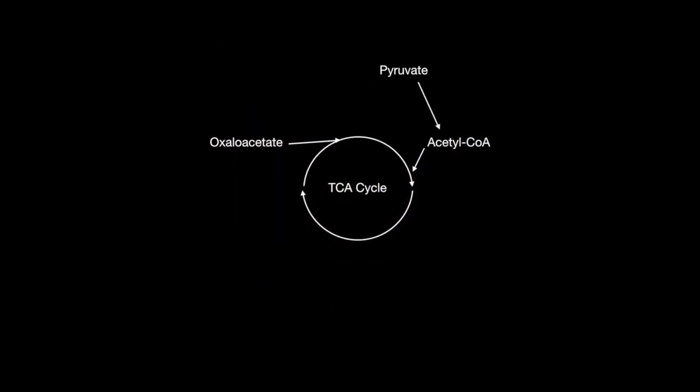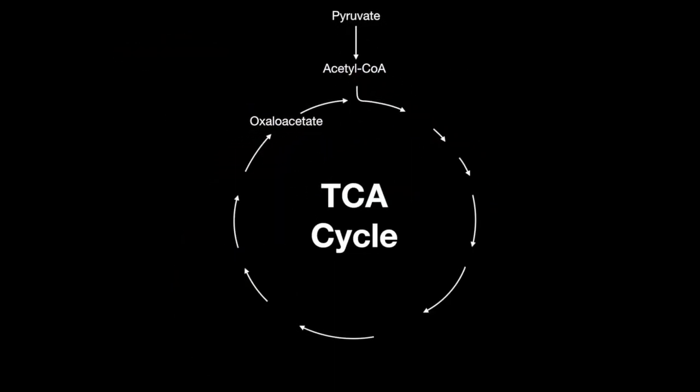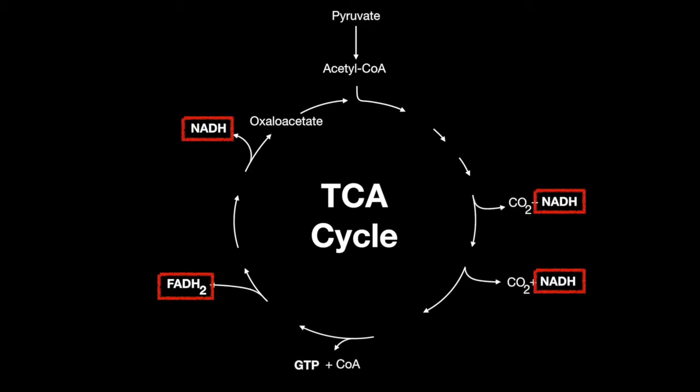Now, let's go over the TCA cycle. The TCA cycle is used to make reducing molecules NADH and FADH2 that can later be used in oxidative phosphorylation to create energy in the form of ATP.